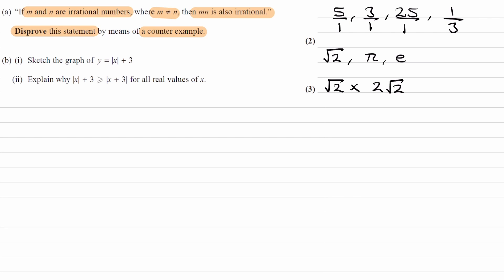These are two numbers that are not equal — m cannot equal n. But when you multiply them together, root 2 times root 2 gives you 2, so the result is 4 overall. This is an example of two irrational numbers multiplying together to give a rational number, which disproves the statement by means of a counterexample.